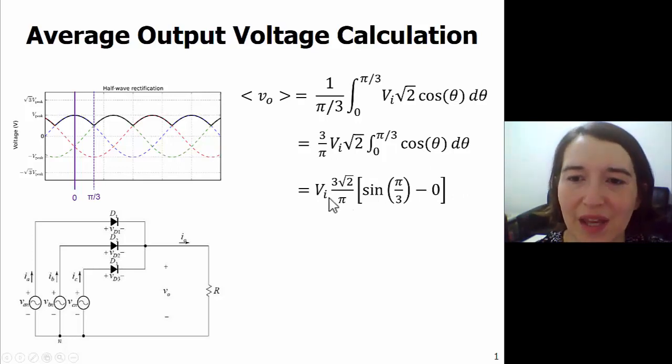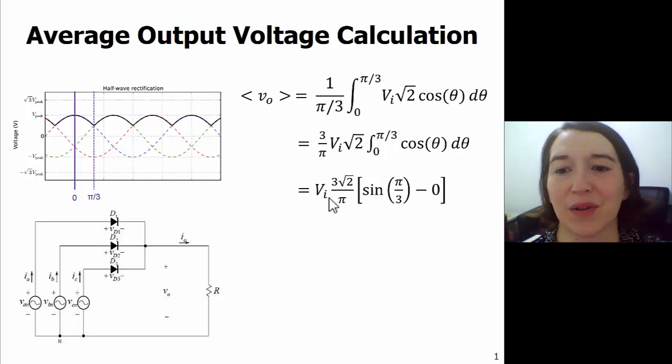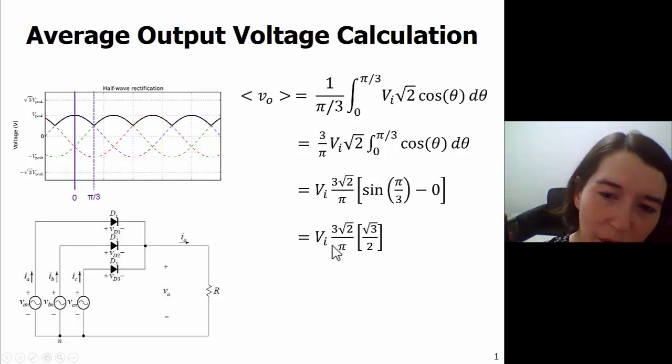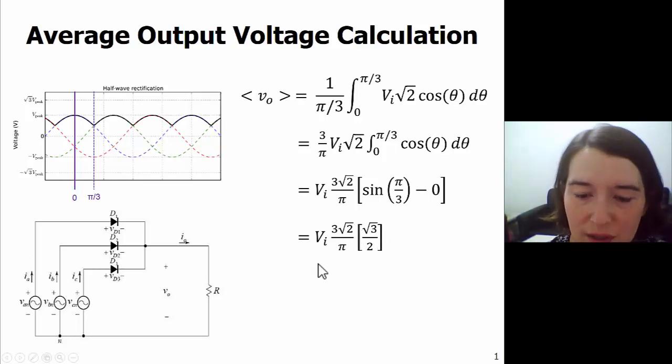And finally we can evaluate pi over three, the sine of that value. We get root three over two, and so now we just put all these together and combine all of our terms.